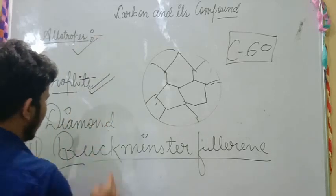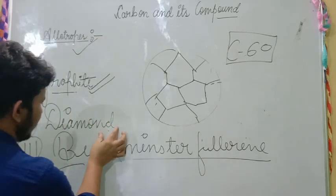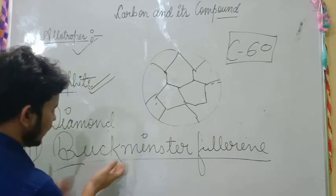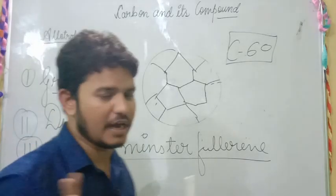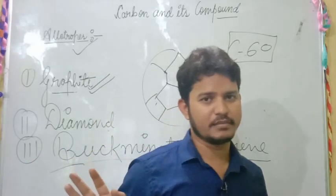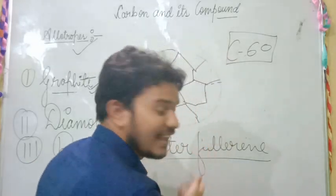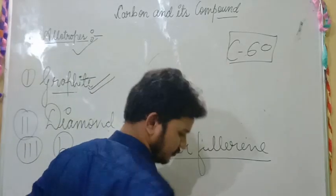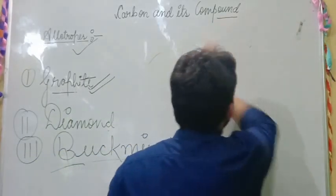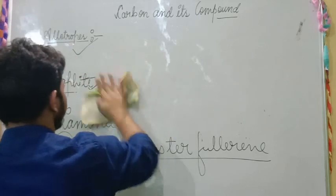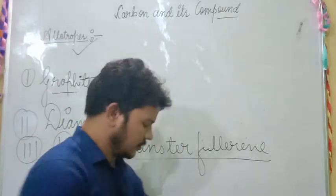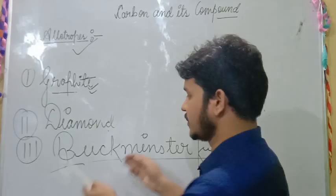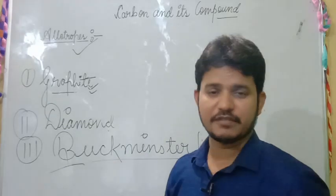In terms of hardness, diamond is the hardest, graphite is the softest, and Buckminster Fullerene is neither too hard nor too soft — it is in between. Scientists are still trying to learn more about Buckminster Fullerene.